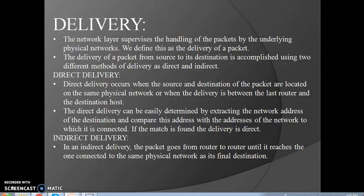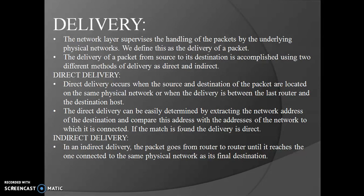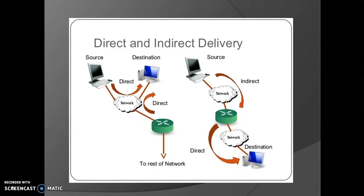The network layer supervises the handling of packets by underlying physical networks — we define this as the delivery of a packet. The delivery of a packet from source to destination is accomplished using two methods: direct and indirect. Direct delivery occurs when the source and destination are on the same physical network, or when the delivery is between the last router and the destination host. It can be determined by extracting the network address of the destination and comparing it with the addresses of the network to which it is connected. In indirect delivery, the packet goes from router to router until it reaches the one connected to the same physical network as its final destination.